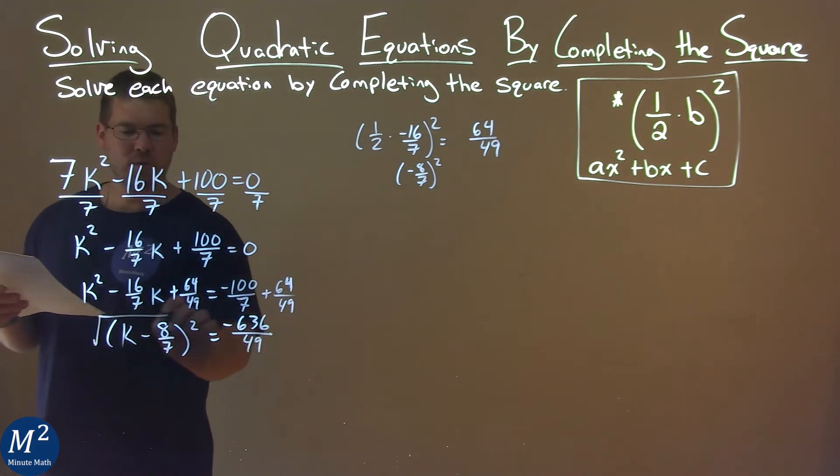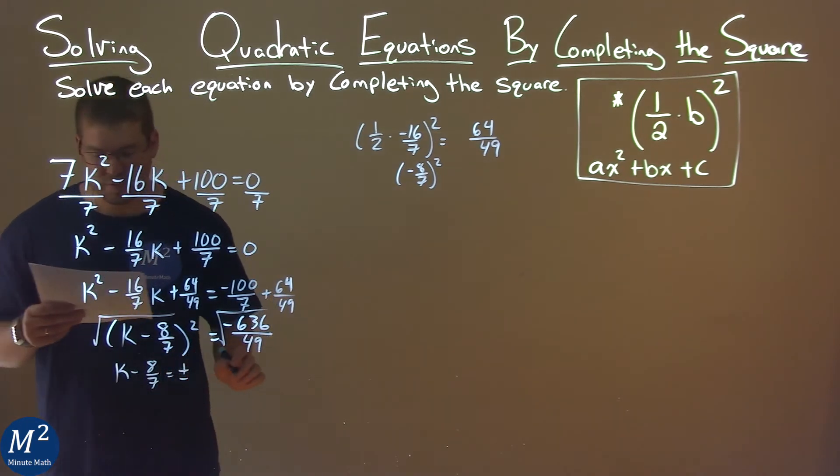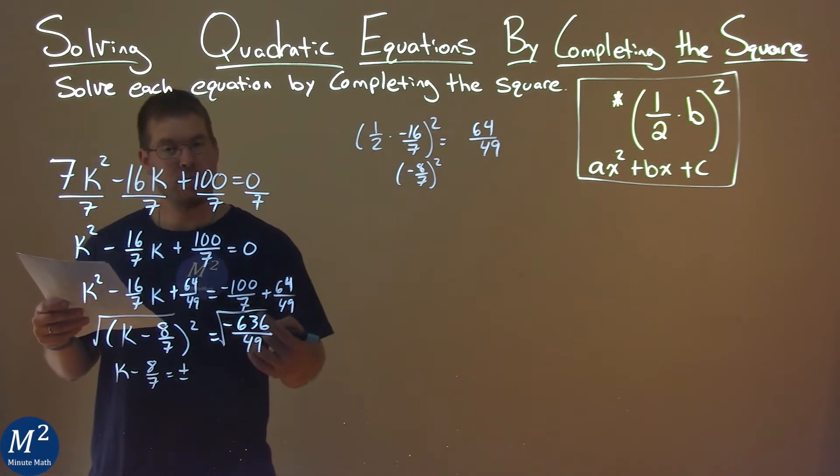And now, I have to take the square root of both sides of the equation, and I'm left with k minus 8 sevenths here, equals plus or minus, and the square root of negative 636 over 49.